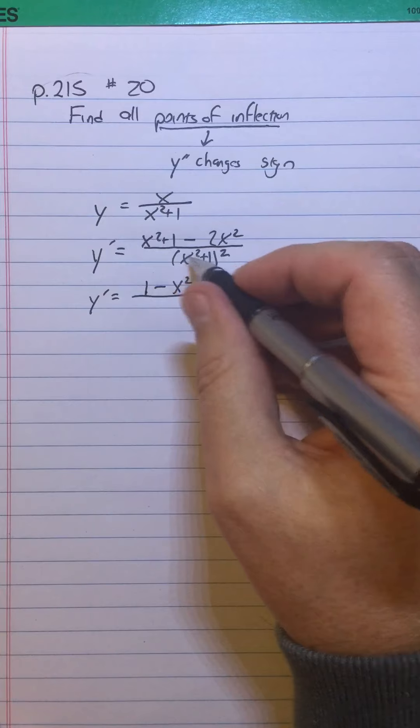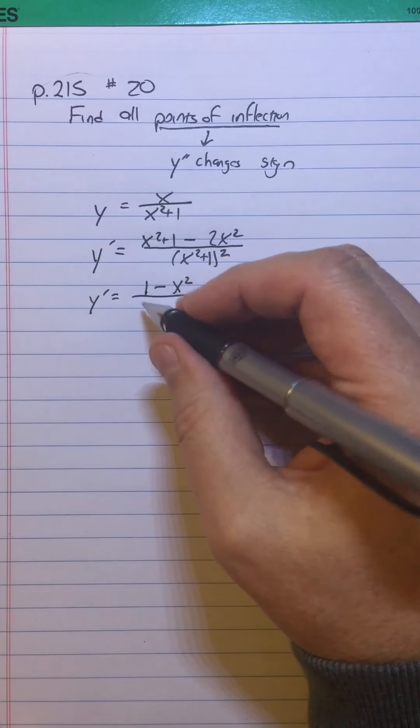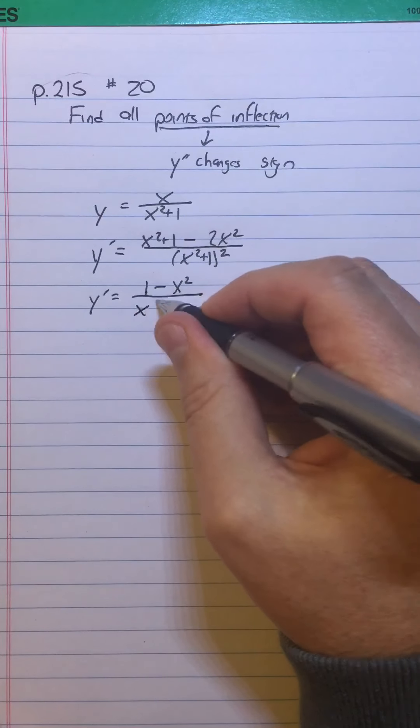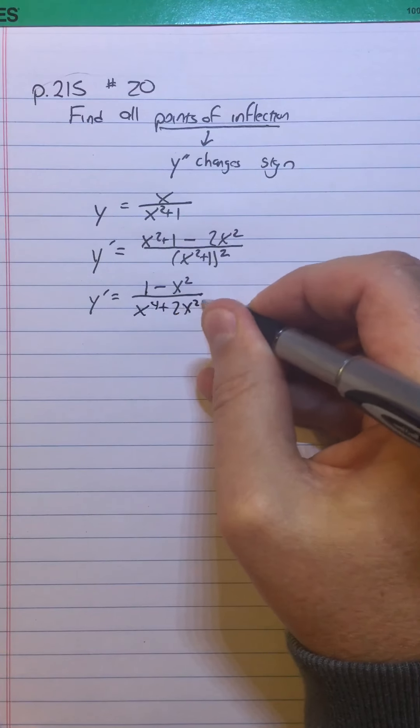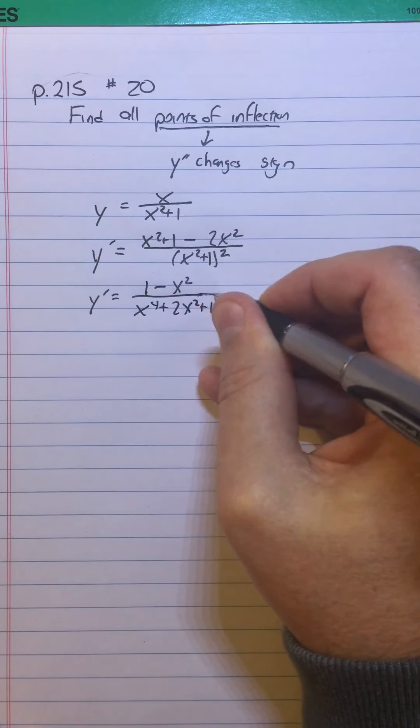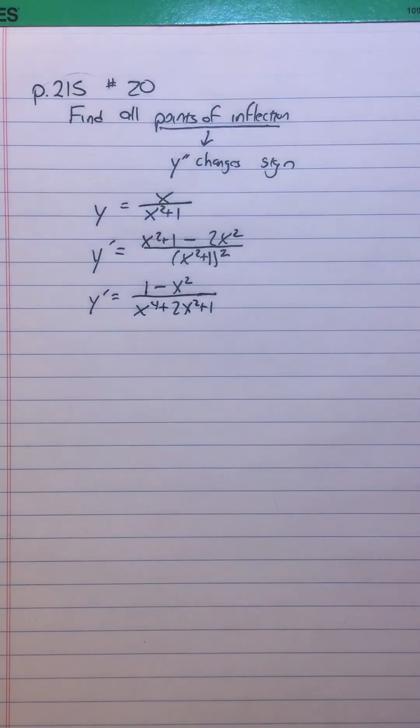In the denominator, I'm going to square that out, so I have X to the fourth plus 2X squared plus 1. And the numerator becomes 1 minus X squared. So that is Y prime.